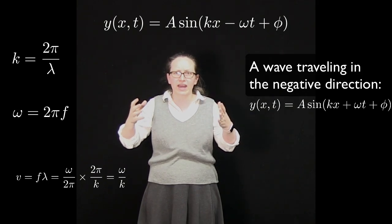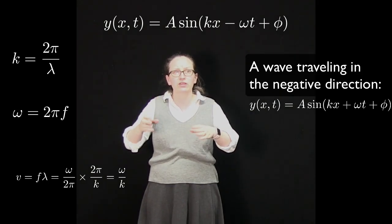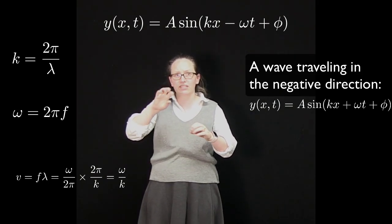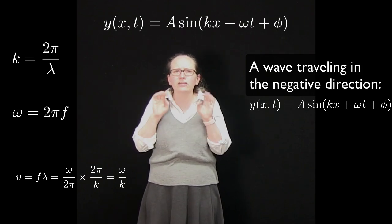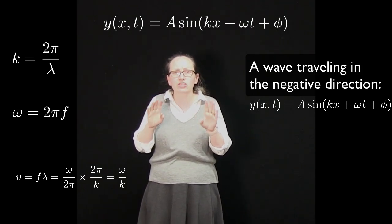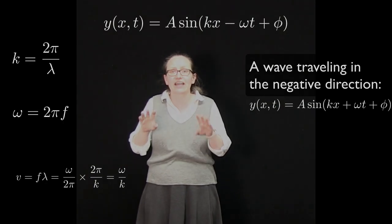You can work that out if you're given a wave equation because ω is the number in front of the t and k is the number in front of the x. So let's have a look at how we can solve a problem with this now.